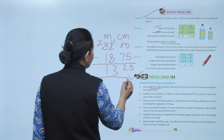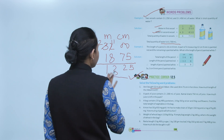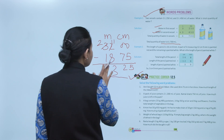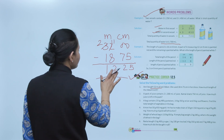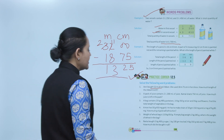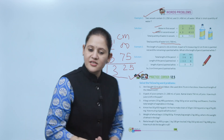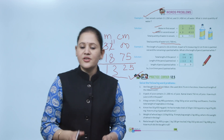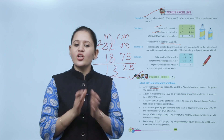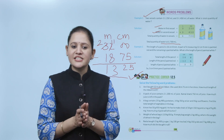Total ribbon left is 13 meters 25 centimeters. Practice all the questions of this exercise.